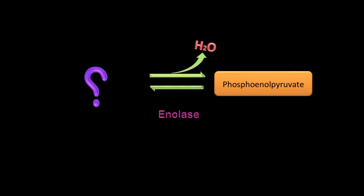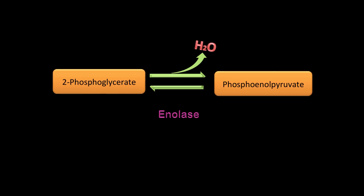Enolase is converting your substrate to PEP — phosphoenolpyruvate. What is this substrate? Excellent — 2-phosphoglycerate. Notice that water is being removed, so this type of reaction is a dehydration reaction.